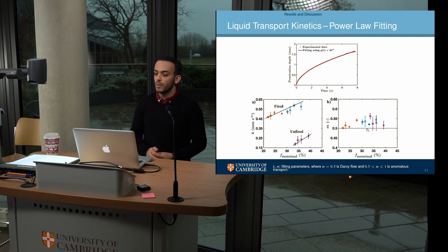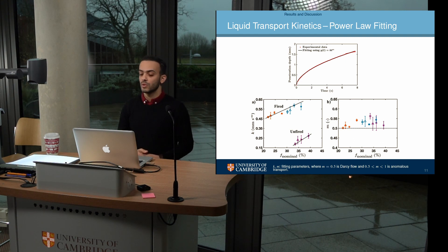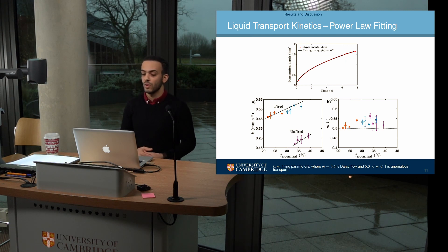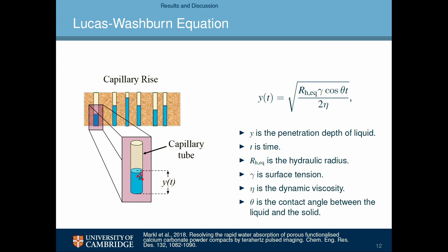Looking at the values of m, we see that all of the alumina samples have a value of m of around 0.5, indicating that the mass transport mechanism obeys Darcy's law, which is driven by a capillary pressure gradient throughout the porous system and allows us to use the Lucas-Washburn equation for further analysis.